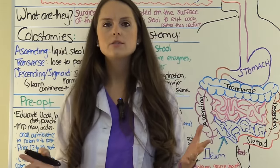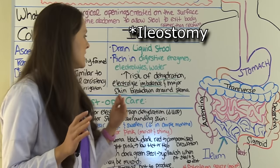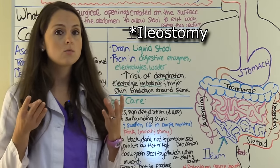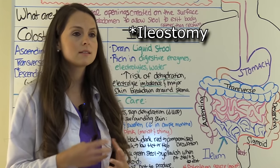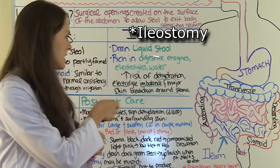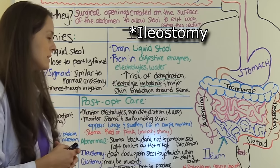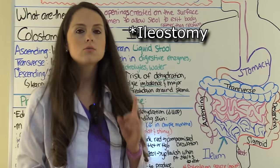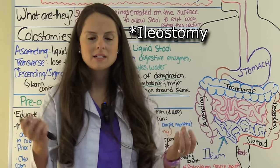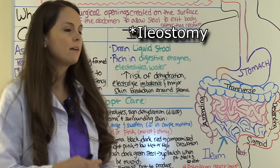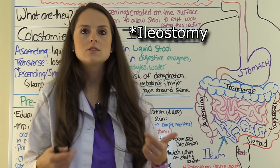Now let's look at the ileostomy. How do you expect the stool to be? As we learned, the small intestine is rich in electrolytes, water, and digestive enzymes. So that stool is always going to be liquid — that's what we expect. Because of those substances being excreted, a patient with an ileostomy has a higher risk of dehydration since the waste won't go through the colon to be absorbed. So they're losing a lot of water, and there's a risk of electrolyte imbalance as well.